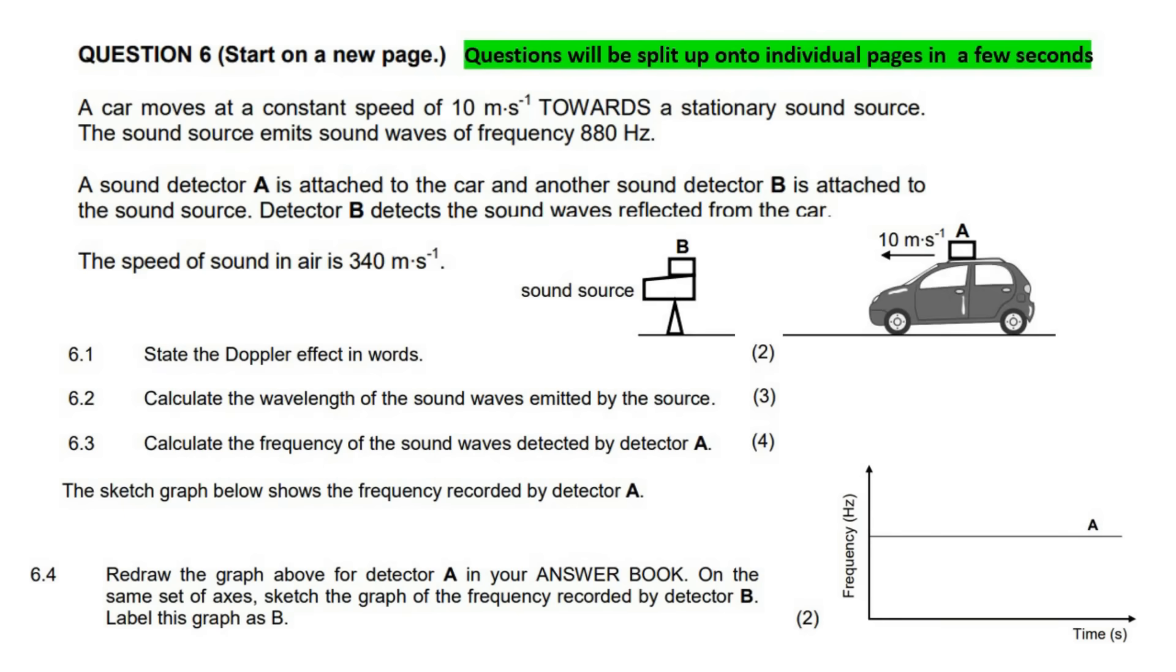A car moves at a constant speed of 10 meters per second towards a stationary sound source. Here we have a sound source that's not moving, and the sound source is busy producing sound. The sound emits sound waves at a frequency of 880 hertz.